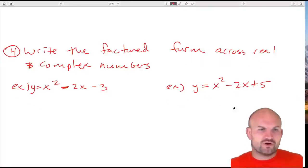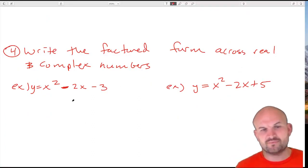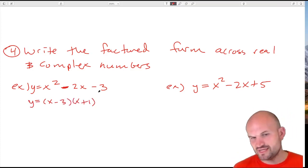The next one is write the factored form across real and complex numbers. When we're factoring a problem like this, we just want to factor it. So here we can have y equals (x - 3)(x + 1). What two numbers multiply to give you negative 3 and add to give you negative 2? There it is.